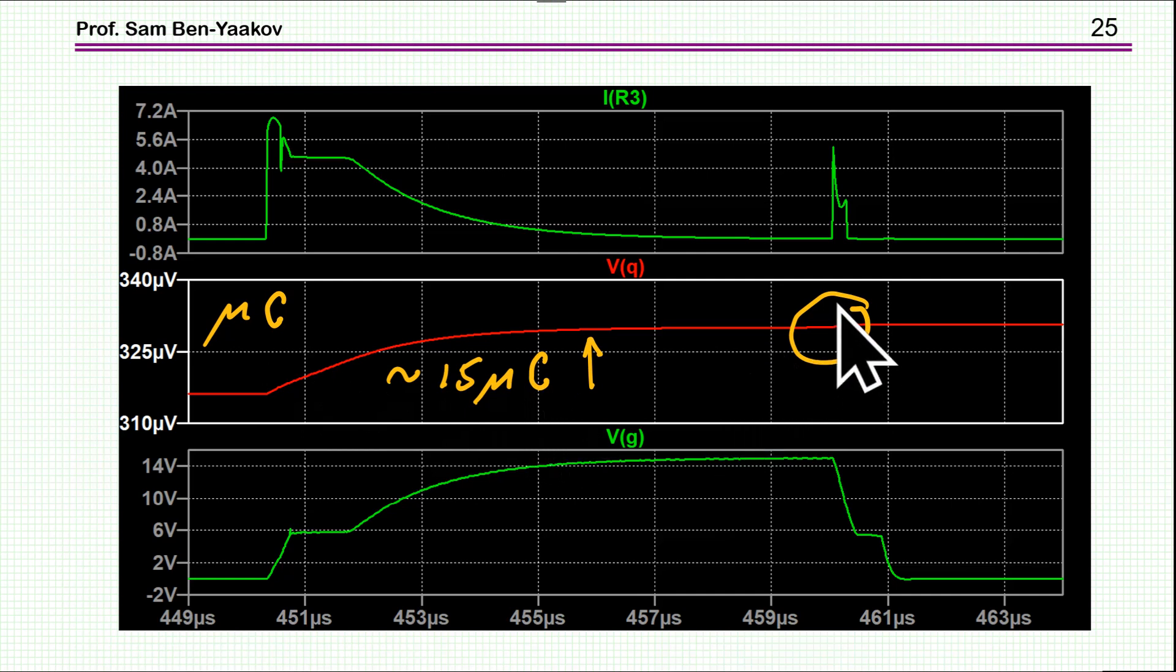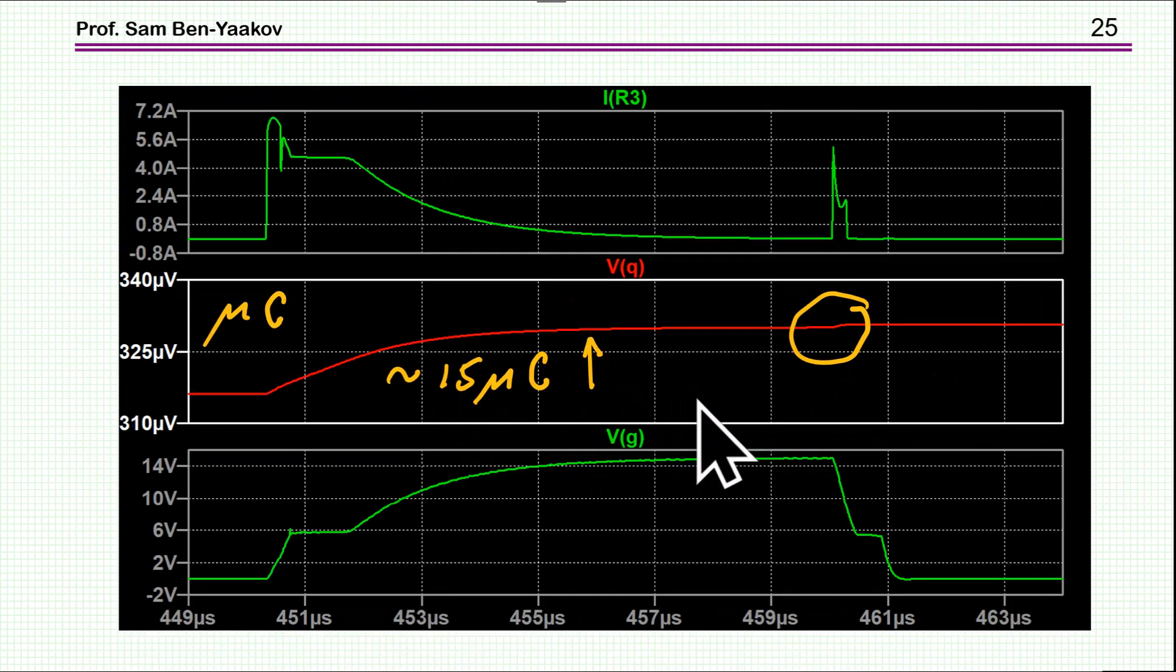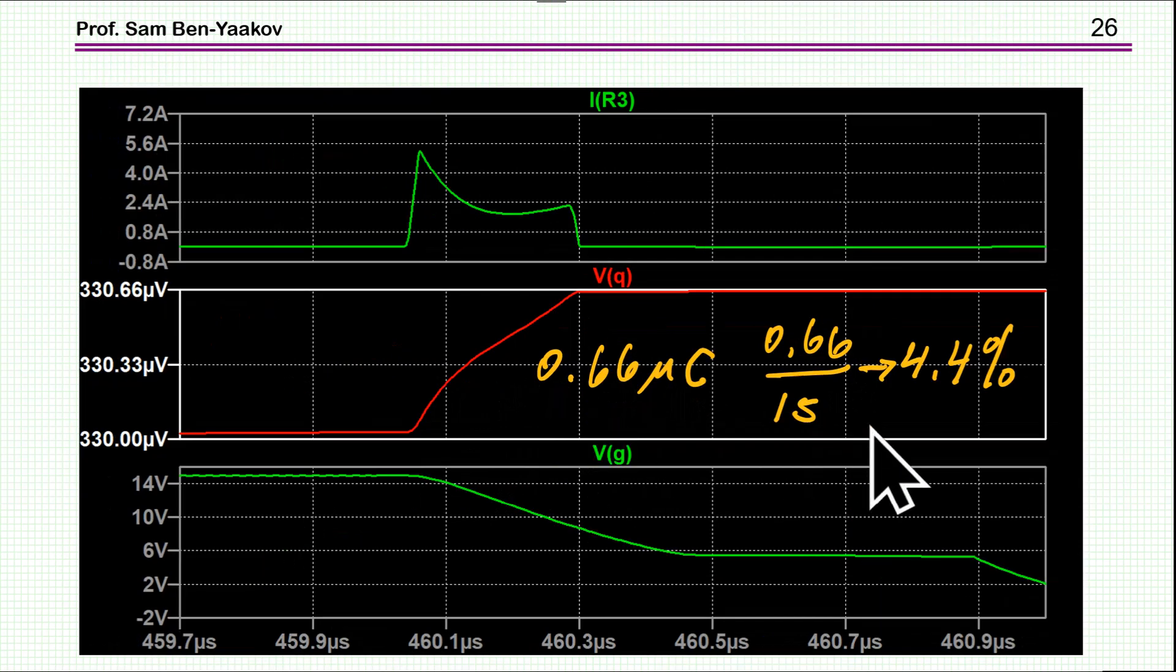And then we have this extra, which we barely can see here, so I've zoomed in, and here it is, and it is this 0.66 microcoulomb as compared to the 15, so it is about, say, 5%. So the penalty is 5% more current, more dissipation, which is rather small, if indeed you'd like to use this configuration.